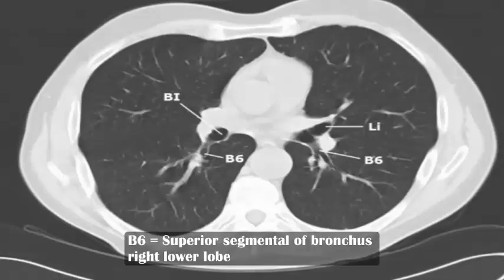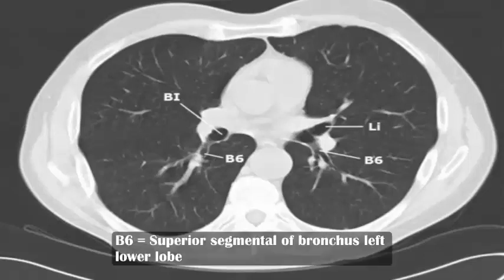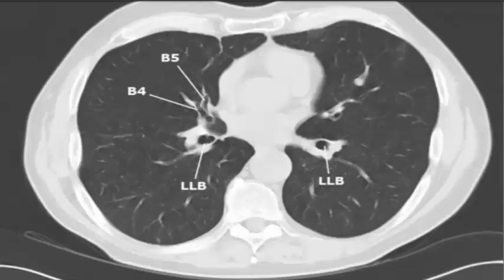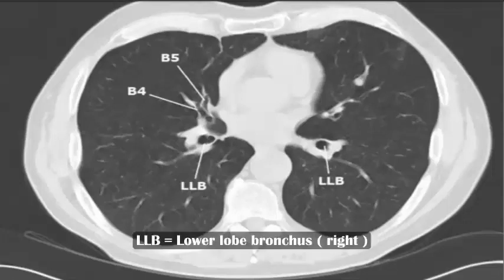B3 Anterior Segment of Bronchus Right area, B4 Anterior Segment of Bronchus Right Upper Lobe, LLB lower lobe bronchus right, LLB lower lobe bronchus left.